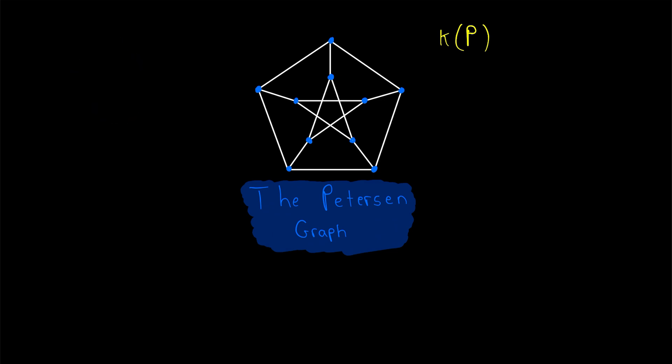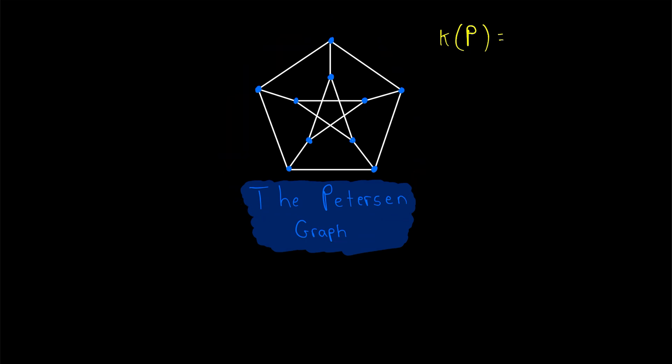The vertex connectivity of the Petersen graph is three. How do we verify that fact? How could we determine ourselves that the vertex connectivity of this graph is three?